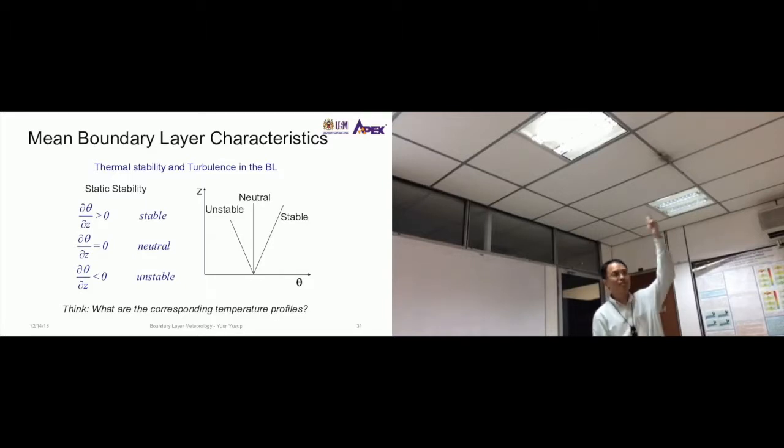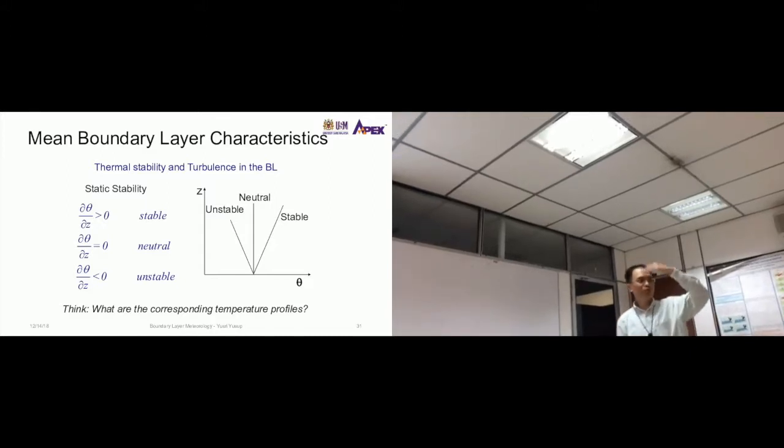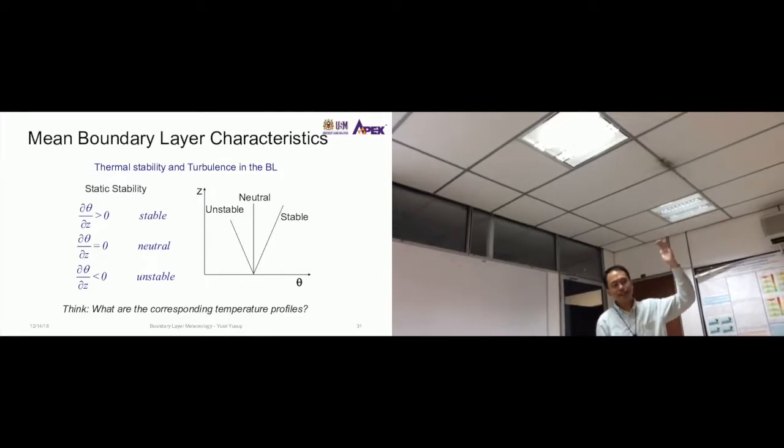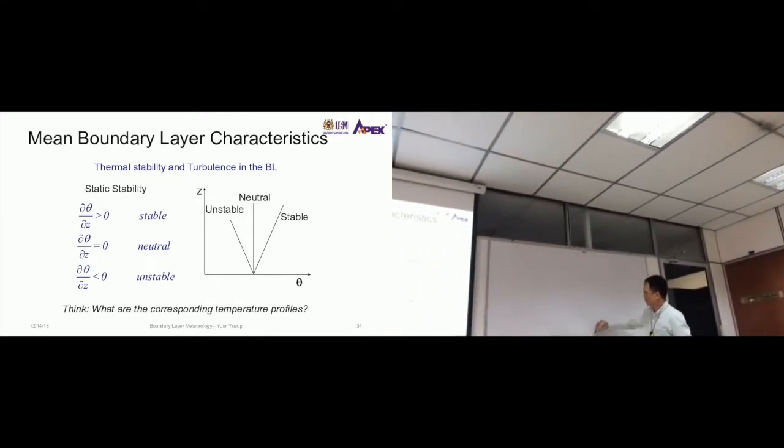This temperature minus that temperature divided by 10, and you get the temperature profile. But you can't just do it for one height. You have to do it for multiple heights, then you average that and get the temperature profile. Because in the environment it's not just like that, it's probably like these, so it depends where you're measuring.